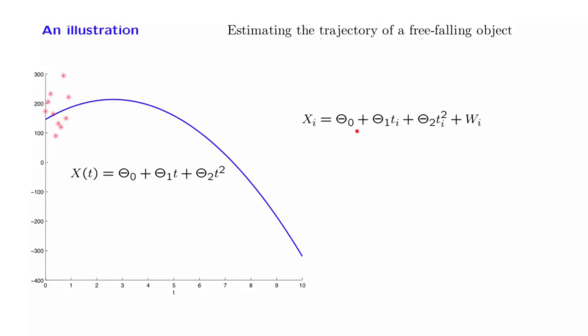And our assumptions were that all the random variables involved, the θs and the Ws, were normal, with 0 mean, and were also independent.